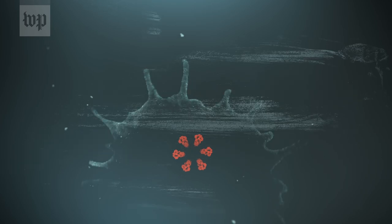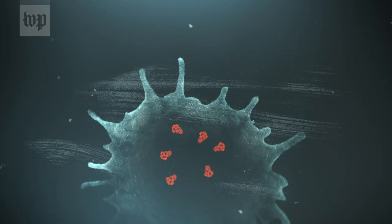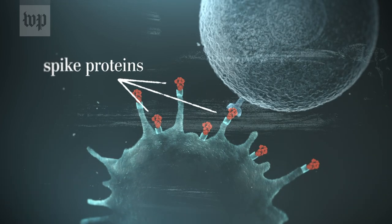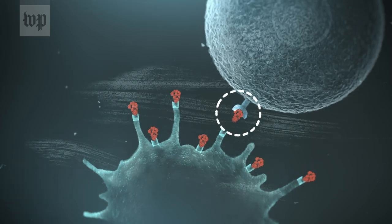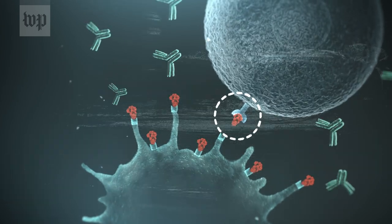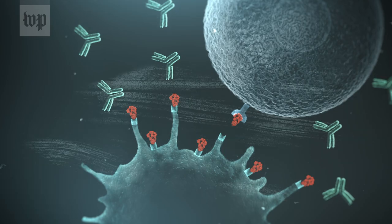So recombinant protein vaccines aren't actually that unique. We've been using them for 20-plus years. They're very reliable because you just make the protein, you present it to the immune system, the immune system recognizes it as something that's foreign, and it generates an antibody and immune response to it.